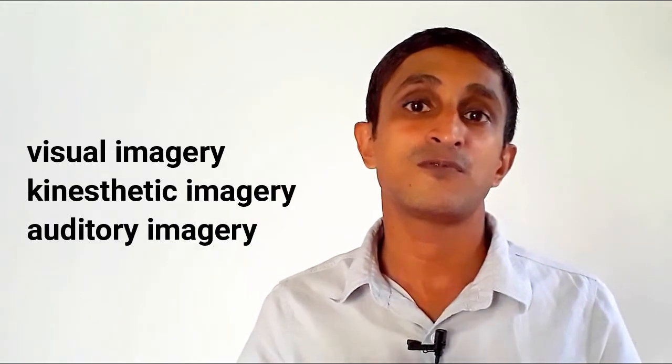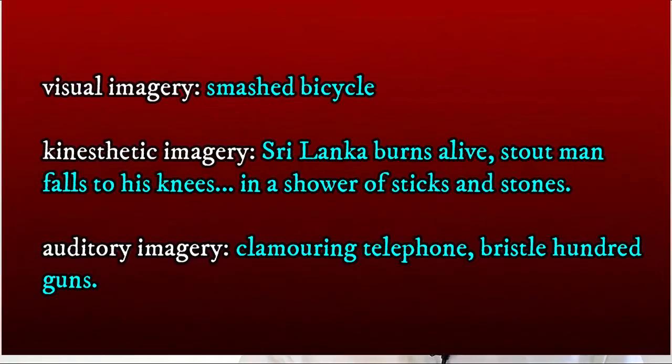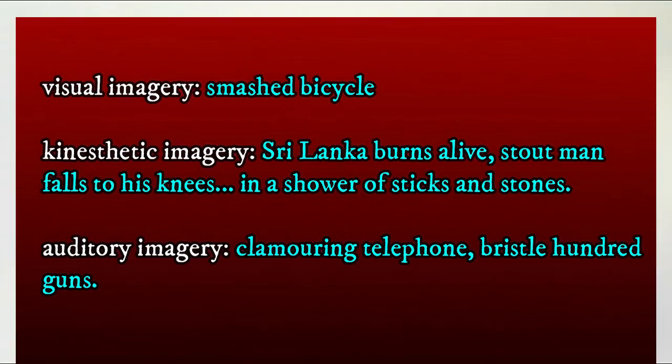The fourth poetic device we're going to discuss is imagery. The poem is like a movie full of vivid imagery. It has visual, kinesthetic, and auditory imagery, creating more of a complete experience of a documentary regarding the communal riots outburst in Sri Lanka. There's visual imagery like smashed bicycle, kinesthetic imagery like Sri Lanka burns alive and stout man sweating with fear falls to his knees in a shower of sticks and stones, and auditory imagery like clamor on telephone, brisk hunting and guns. Through this full imagery, Gururathana lets the reader experience the poem while reading it.